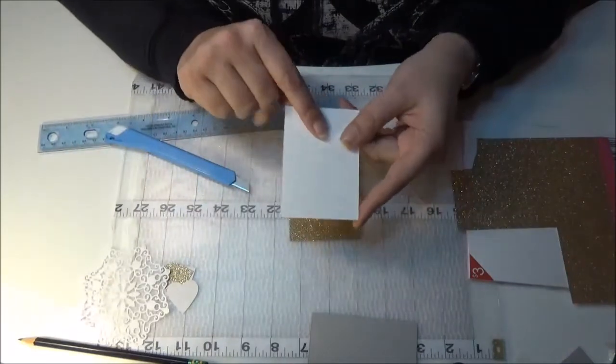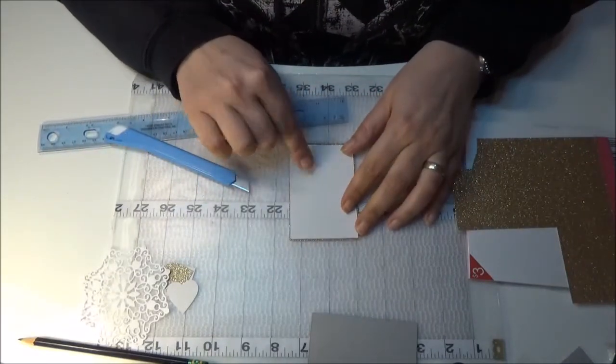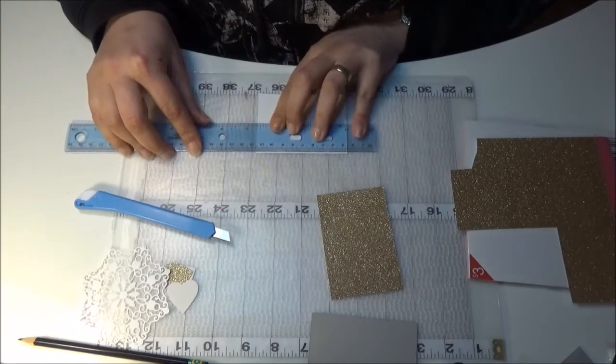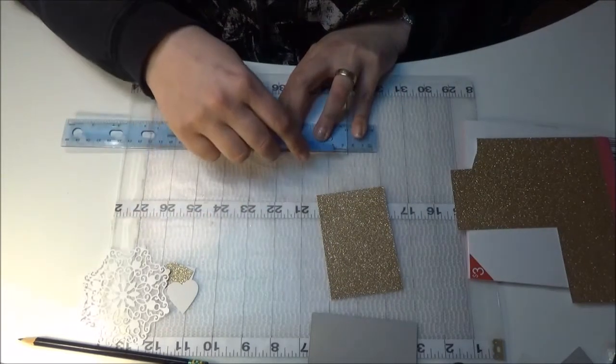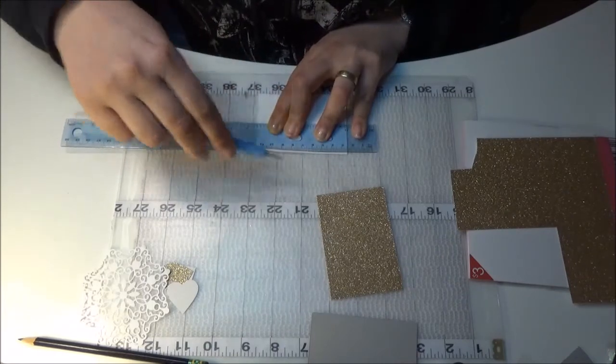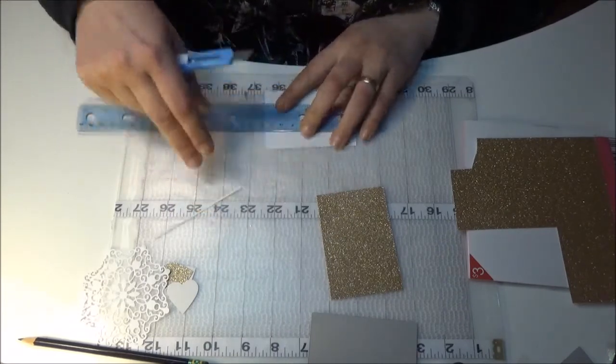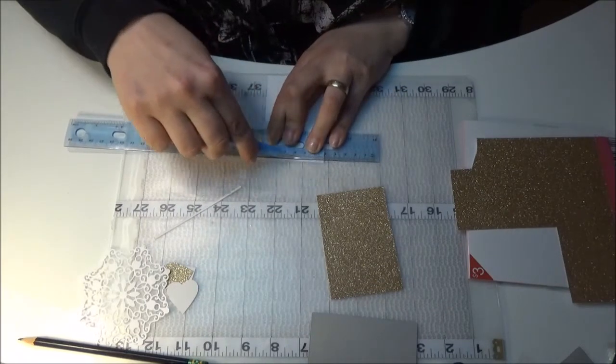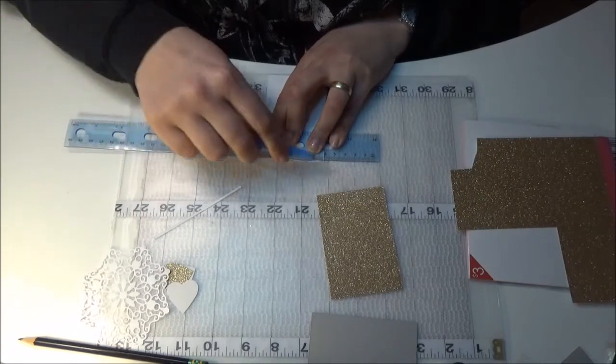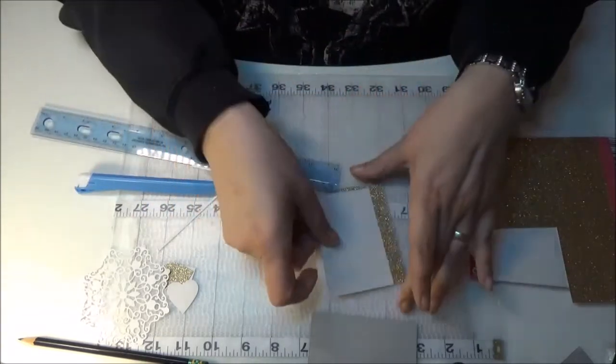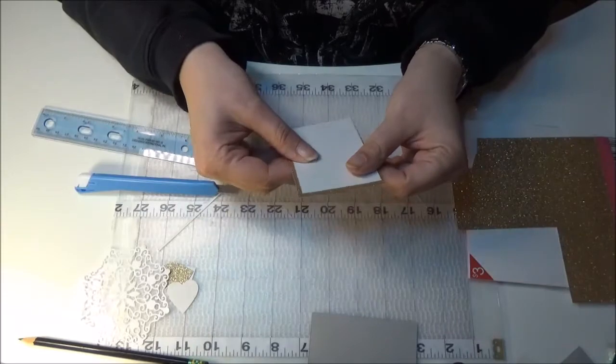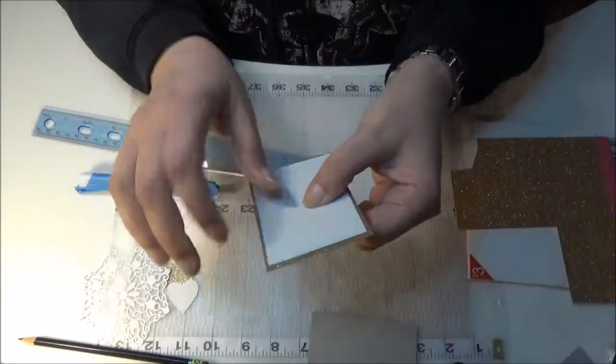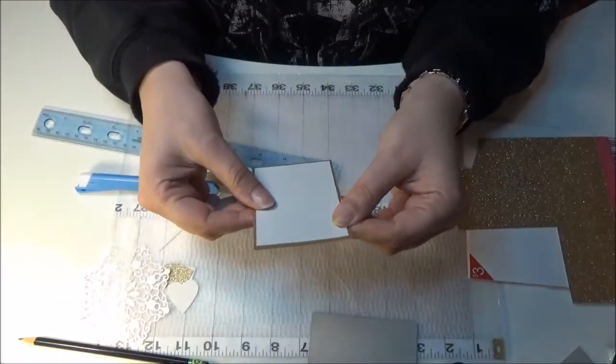Then I will need a white piece of paper which has to be smaller than the golden one, so I'll just cut off a little piece. So it looks like this. You can see the gold paper just sticking out here.